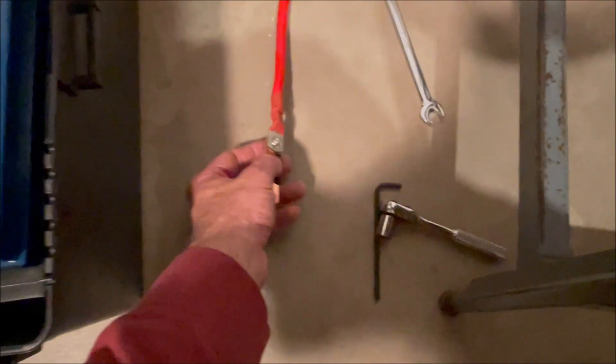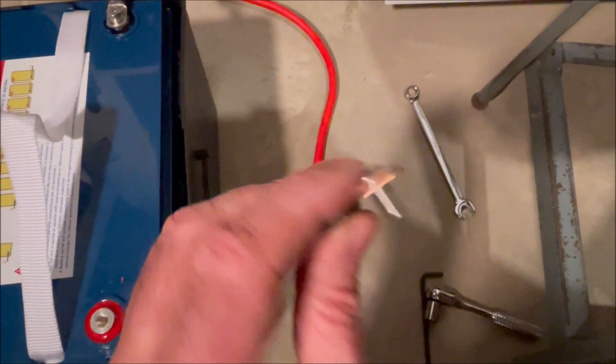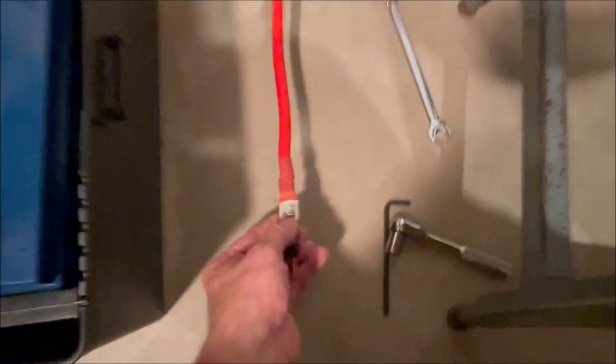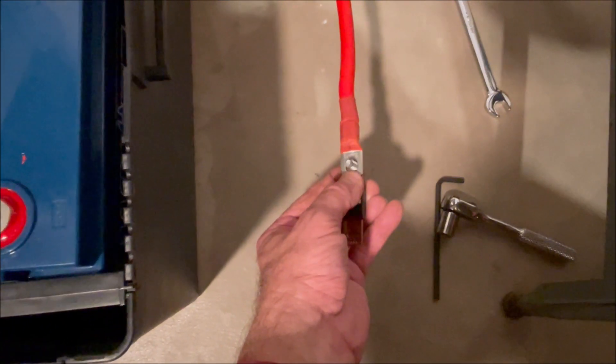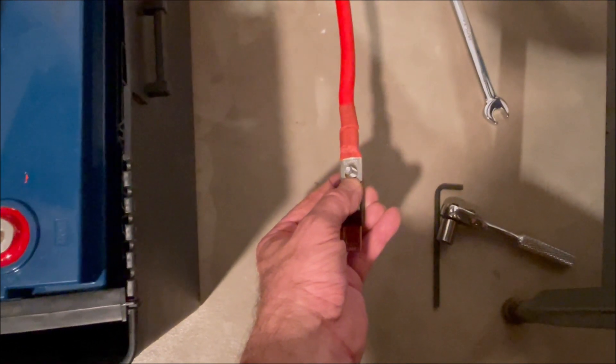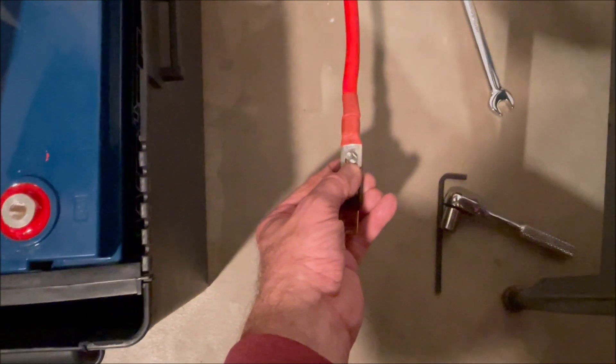So what I'm gonna do now is I got the bolt in the fuse. I'm gonna put that through the cable. Now I'm going to add a flat washer, lock washer, and a bolt and tighten that down.